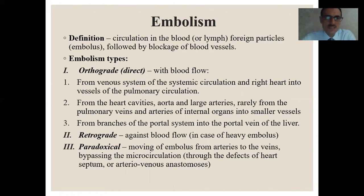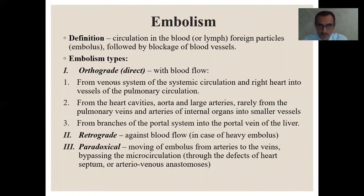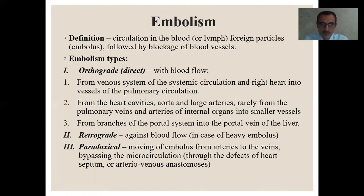Embolism is circulation in the blood or lymph of foreign particles — known as the embolus — followed by blockage of blood vessels. There are three types of embolism. First, orthograde — direct with blood flow: from the venous system of systemic circulation and right heart into vessels of the pulmonary circulation; from heart cavities, aorta, and large arteries; from pulmonary veins and arteries of internal organs into smaller vessels; and from branches of the portal system into the portal vein of the liver. Second, retrograde — against blood flow in case of a heavy embolus. Third, paradoxical — movement of the embolus from arteries to veins, bypassing the microcirculation through defects of heart septa or arteriovenous anastomoses.